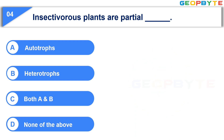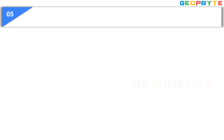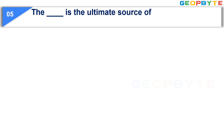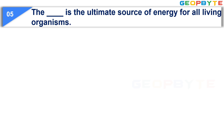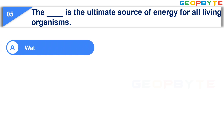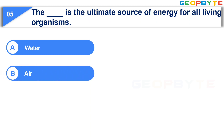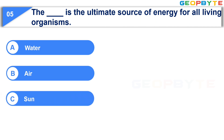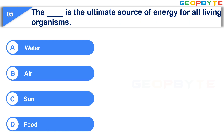Your time is up and the correct answer is Option B, Heterotropes. Moving to the next question: The dash is the ultimate source of energy for all living organisms. Option A: Water. Option B: Air. Option C: Sun. Option D: Food. Your time starts now.